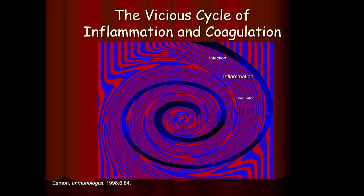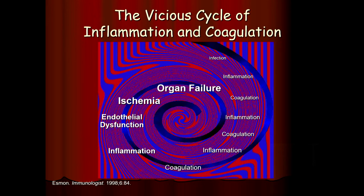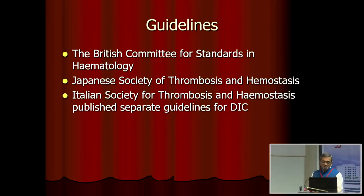Generally, what happens in these patients is that there is a vicious cycle — infection, inflammation depending on the cause of DIC, and several events taking place inside. At the end of it there is endothelial dysfunction, ischemia, organ failure, and that's why 'death is coming' is the acronym given to DIC — you can land up in this kind of a situation.